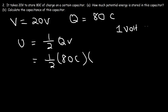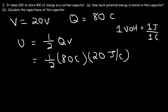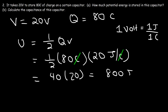One volt is one joule per coulomb, so 20 volts is basically 20 joules per coulomb. The coulombs cancel, giving us the unit joules. Half of 80 is 40, and 40 times 20 is 800, so there are 800 joules of potential energy stored in this capacitor.